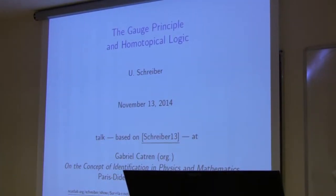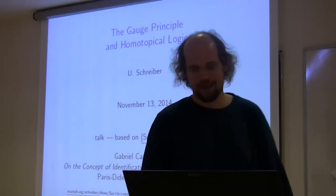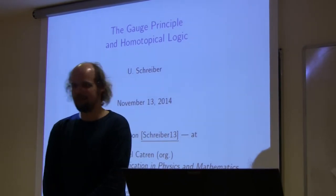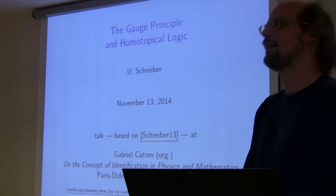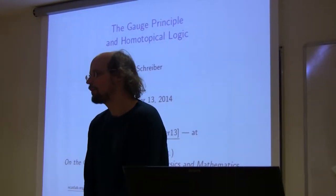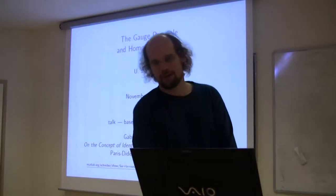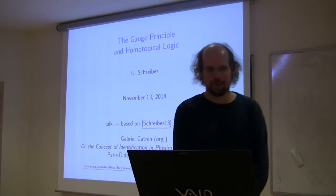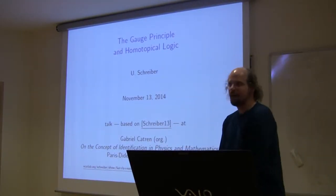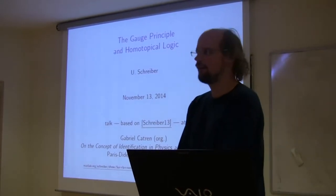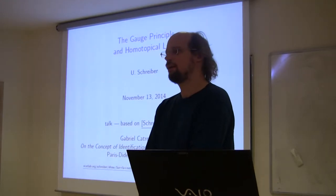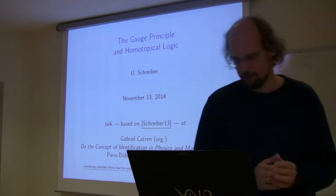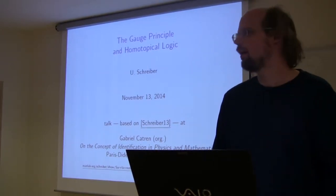The punchline I'm going to make is that now that mathematicians — since maybe four or five years — have finally realized one should better distinguish things, better keep track of objects being equivalent without necessarily being identified, I would like to make the point that this is an insight that fundamental physicists made in the middle of the 20th century, almost 70 years back already. I'll talk about how the gauge principle in quantum field theory is really pretty much the homotopical logic that Eric Finster just presented, connecting to the talks by Mathieu and Eric Finster this morning.